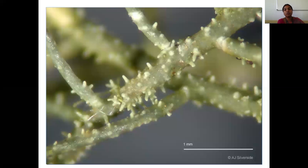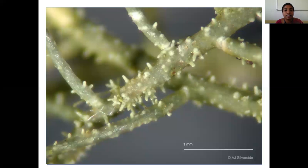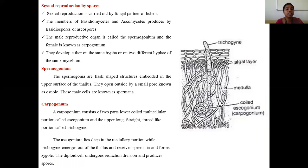The third vegetative mode is by isidia. Isidia are column-shaped cells produced by the lichen. These column-shaped cells can sometimes detach from the lichen thallus, and wherever they fall they grow into a new lichen thallus.